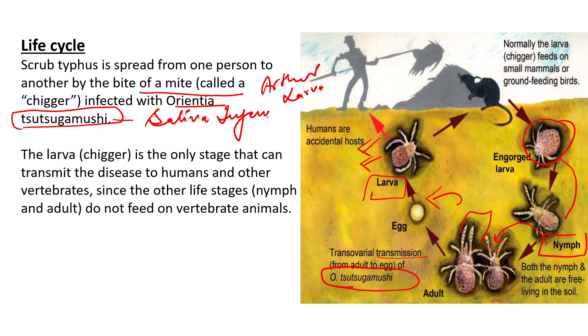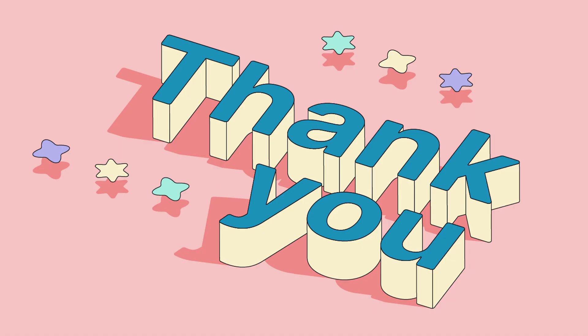When this infected larva bites a human, the Orientia tsutsugamushi present in its saliva is transferred, causing signs and symptoms like rash and fever — indicating the person is suffering from scrub typhus. This completes the life cycle of scrub typhus. This lecture covered the introduction, life cycle, and classification. Pathogenesis, diagnosis, treatment, and clinical manifestations will be covered in the next session. Thank you — kindly like and subscribe to our channel.